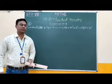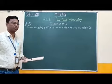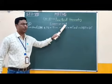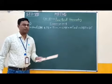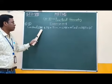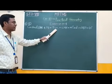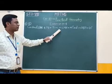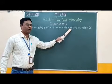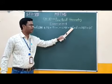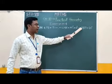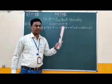Good morning students. In this video we are going to solve question number 2 of exercise 8.4. The question is: construct triangle PQR if PQ is equal to 5 cm, measure of angle PQR is equal to 105 degrees, and measure of angle QRP is equal to 40 degrees.